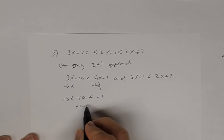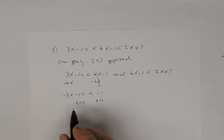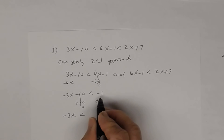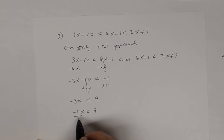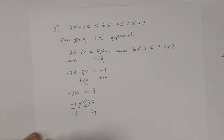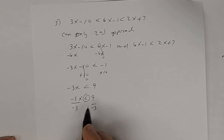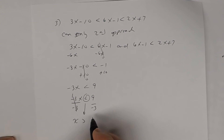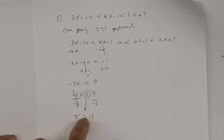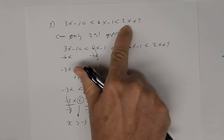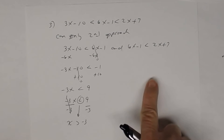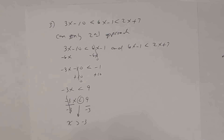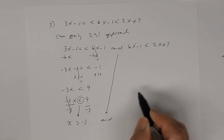Solving the first inequality: subtract 6x from both sides to get negative 3x − 10 < −1. Add 10 to both sides: negative 3x < 9. Divide both sides by negative 3 — reverse the symbol — so x > −3. Any real number greater than negative 3 is a solution to this inequality only, not necessarily to the original compound inequality.